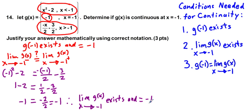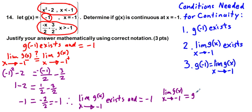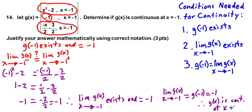The limit equals negative 1, and we see that g of negative 1 also exists and equals negative 1. We conclude our statement by saying: the limit as x approaches negative 1 of g of x equals g of negative 1, which equals negative 1. Therefore, g of x is continuous at x equals negative 1.